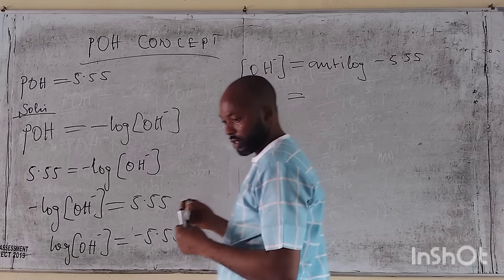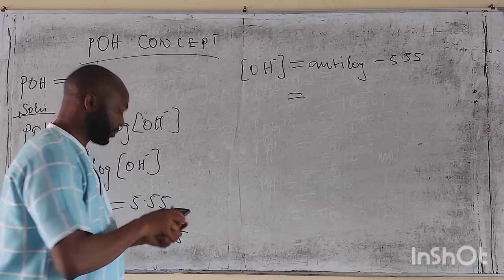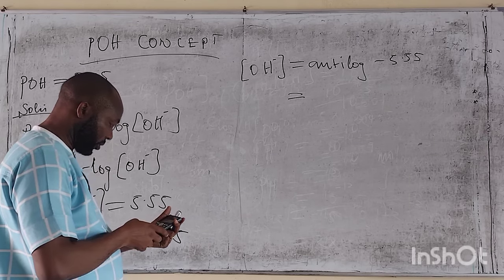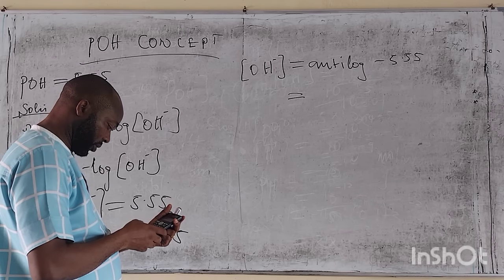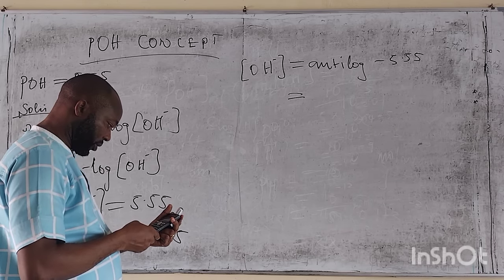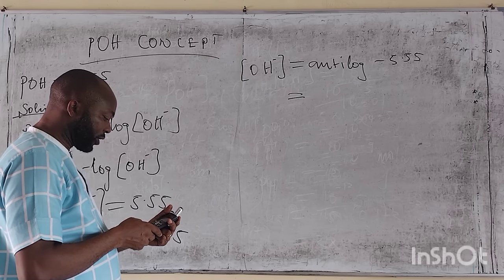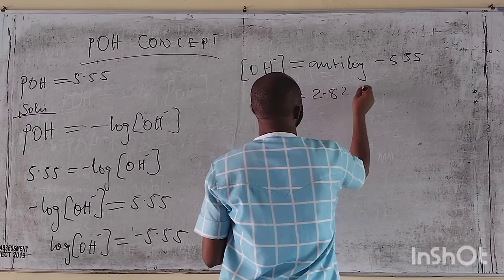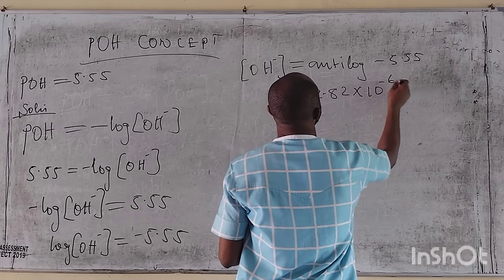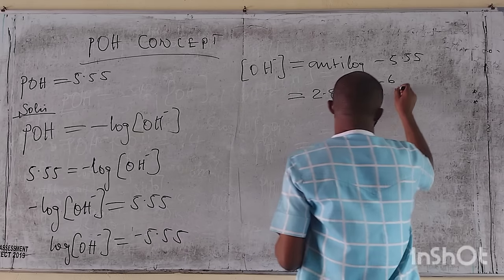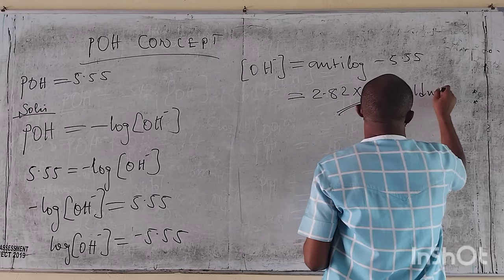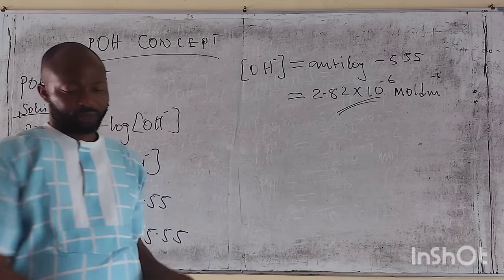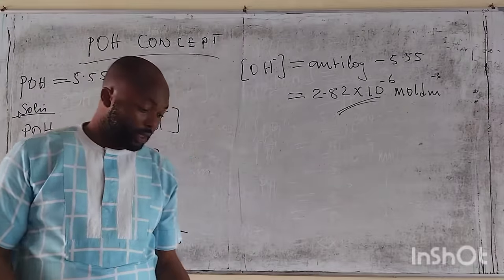The anti-log of minus 5.55 gives us 2.82 times 10 raised to minus 6 mol/dm³. That is our hydroxide ion concentration — the unit is important. That is the first part of the solution.